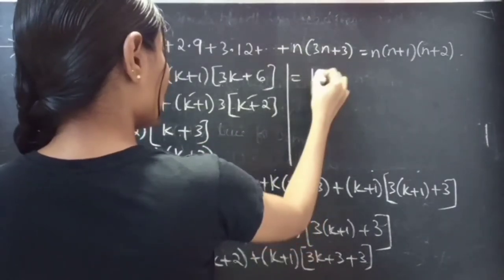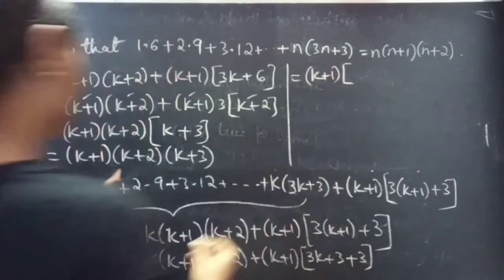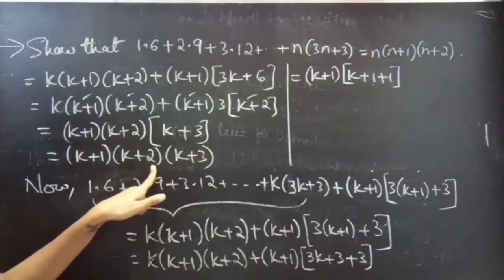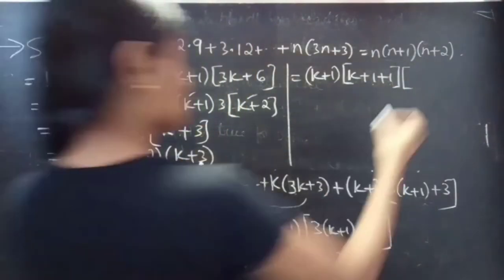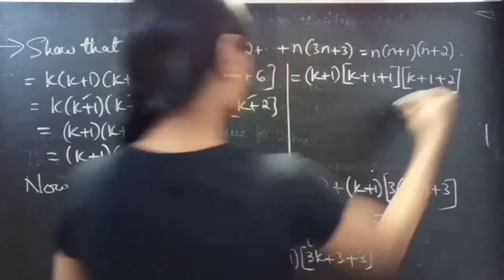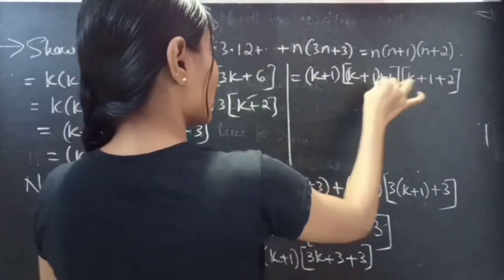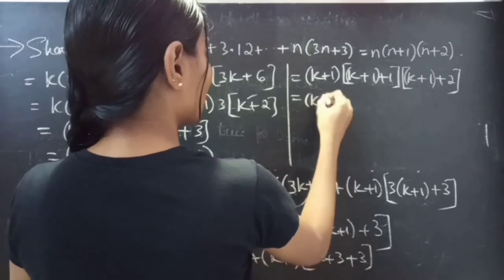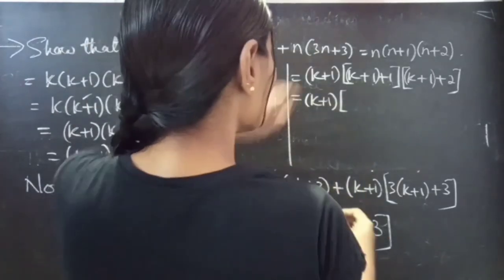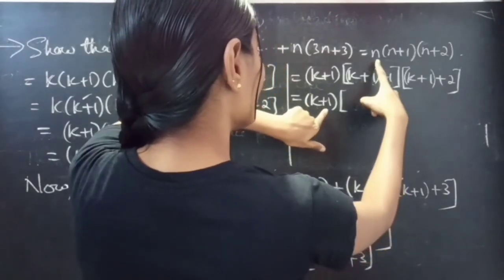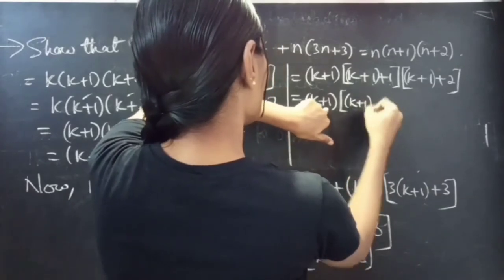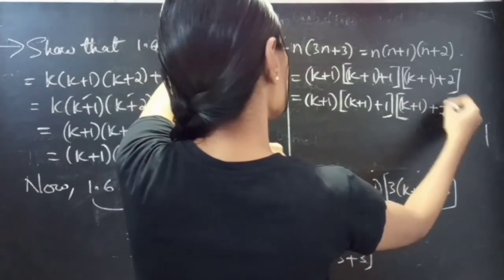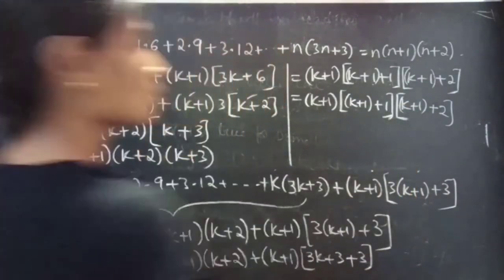We need to write this in terms of k plus 1, so we split: k plus 2 as k plus 1 plus 1, and k plus 3 as k plus 1 plus 2. This gives us n into n plus 1 into n plus 2 for n equals to k plus 1, which is the RHS for n equals to k plus 1.